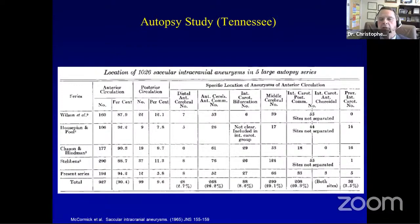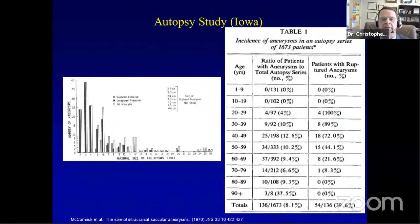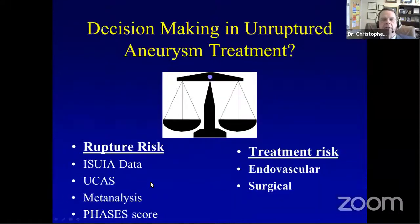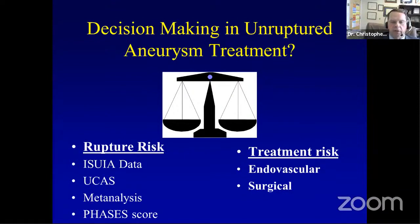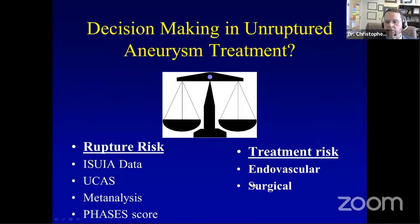Pooled data also gives a spread of aneurysm size across studies. An Iowa autopsy study of over 1,600 patients from 1970 shows incidence data. When we identify an unruptured aneurysm with current neuroimaging, we try to predict its rupture risk and balance that against the predicted treatment-related risk — whether endovascular or surgical. Our rupture risk estimates come from several major studies, meta-analyses, the PHASES score, and the UTAS score.